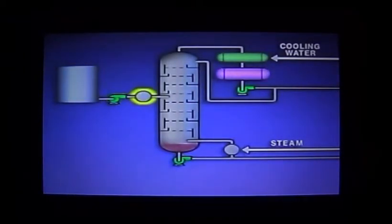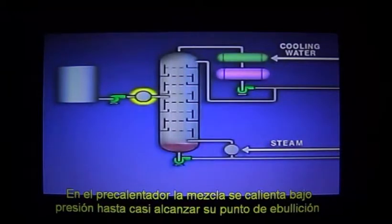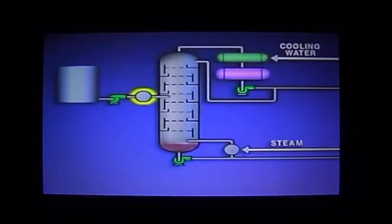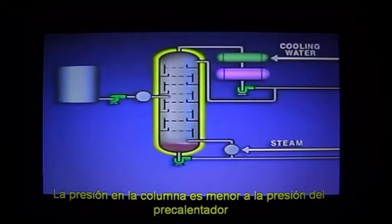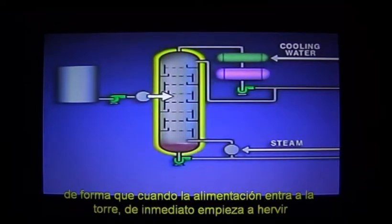In the preheater, the mixture is heated under pressure to just below its boiling point. The pressure in the tower is lower than the pressure in the preheater, so when the feed enters the tower it starts to boil.